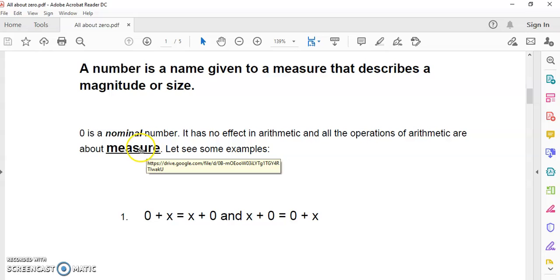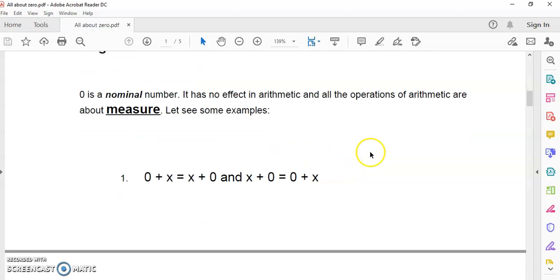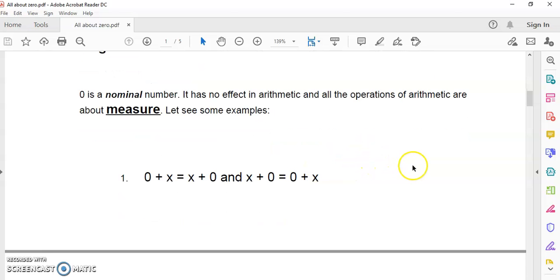is a name given to a measure that describes a magnitude or size. And what you can do is you can look at this article here. There is a link to it. I'll place a link to everything so you don't have to worry, to see what it means to measure and to look at what the operations of arithmetic are and how we measure. So first of all, zero is a nominal number. What does that mean?